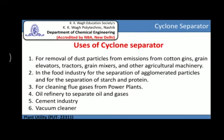Cyclone separators are used for the removal of dust particles from emissions from cotton gins, grain elevators, tractors, grain mixers, and other agricultural machinery. In the food industry, they are used for the separation of agglomerated particles and for the separation of starch and protein. They are also used for cleaning flue gases from power plants, in oil refineries to separate oil and gases, in the cement industry, and in vacuum cleaners.